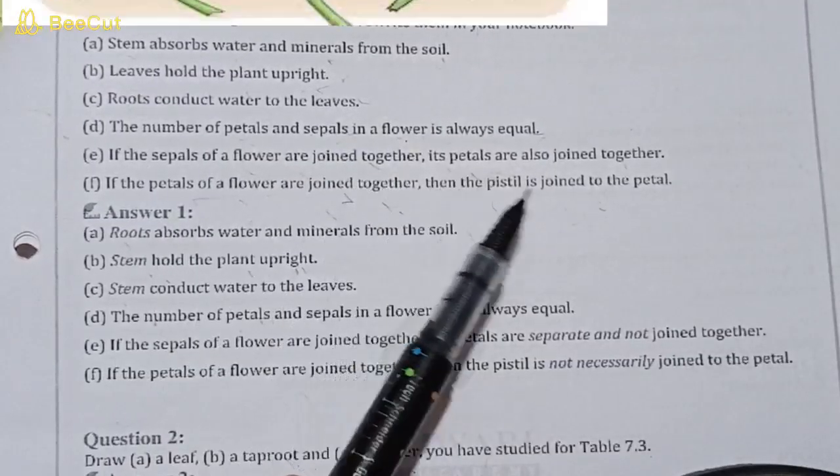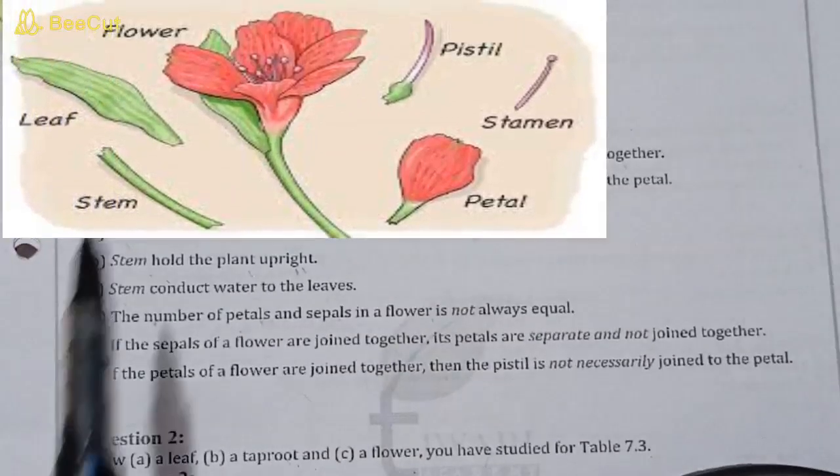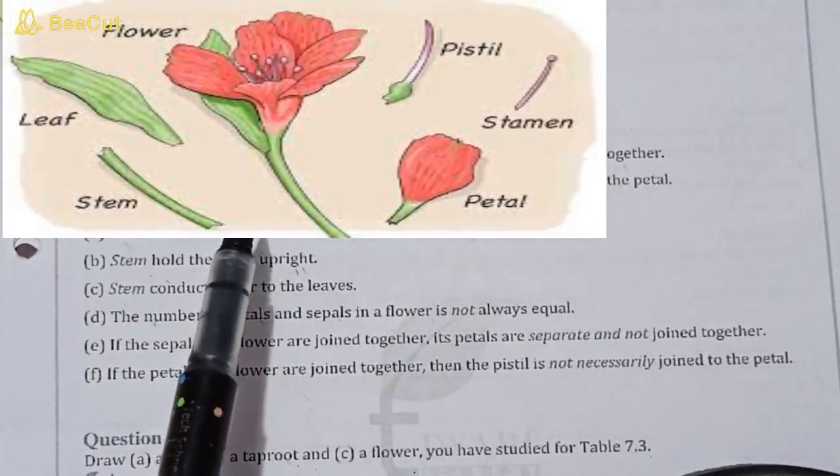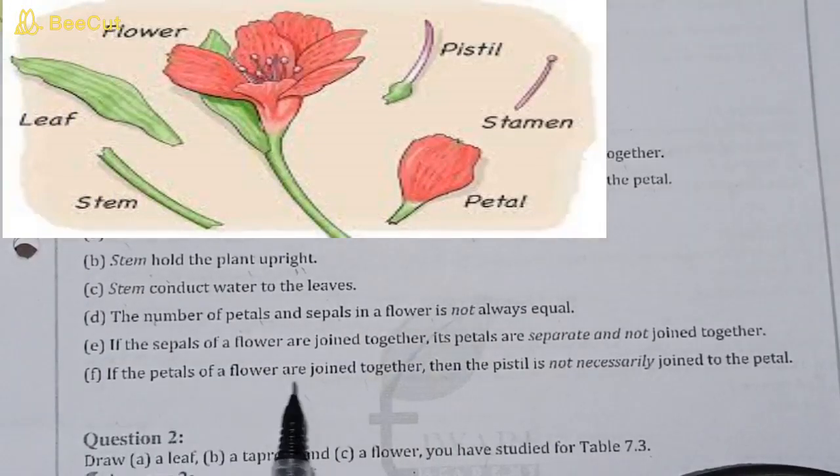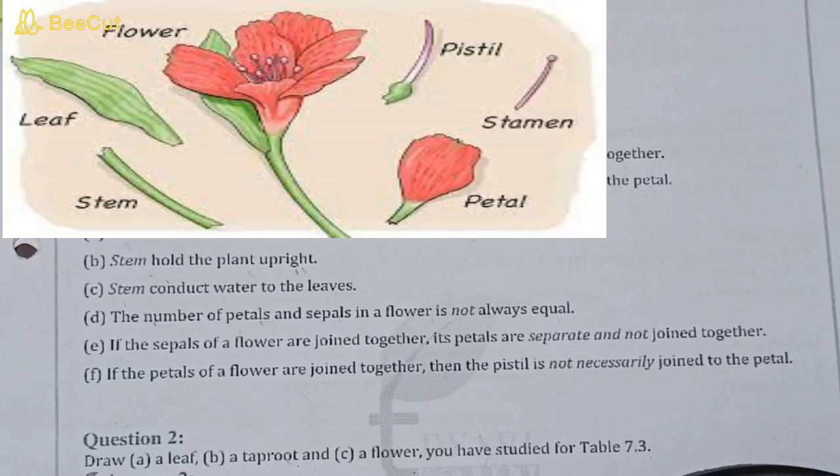If the petals of a flower are joined together, then the pistil is not joined to the petal. If the petals of a flower are joined together, then the pistil is not necessarily joined to the petals. It is not necessary that the pistil is also joined with each other.